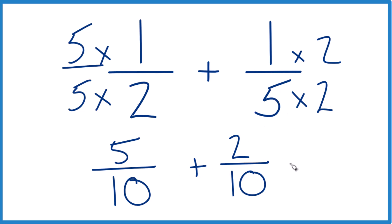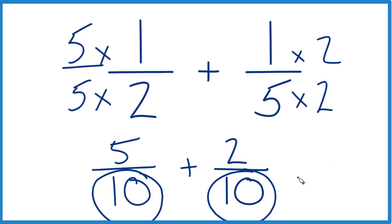But now we have the same denominators, we're going to add the numerators up. So 5 plus 2 is 7 and then we just bring the 10 across. 7 tenths.